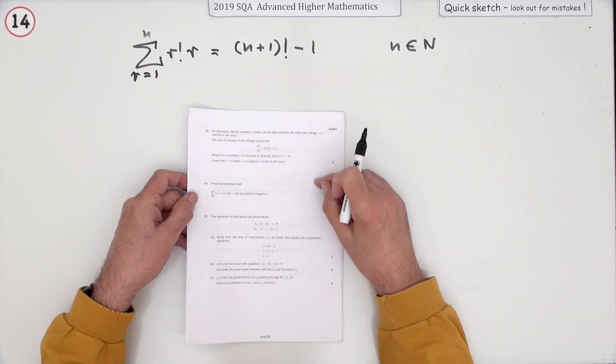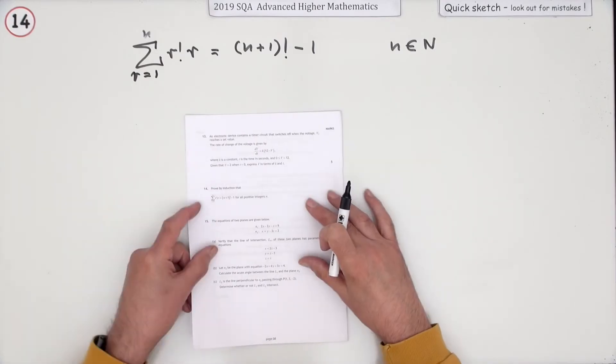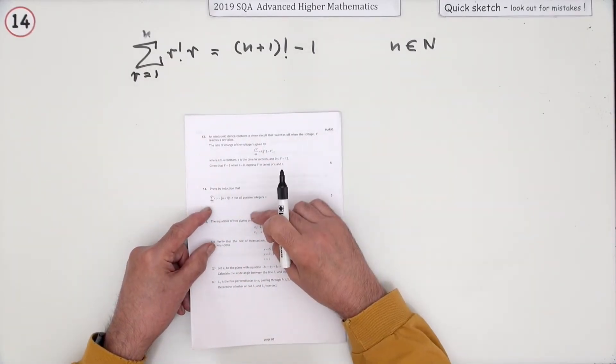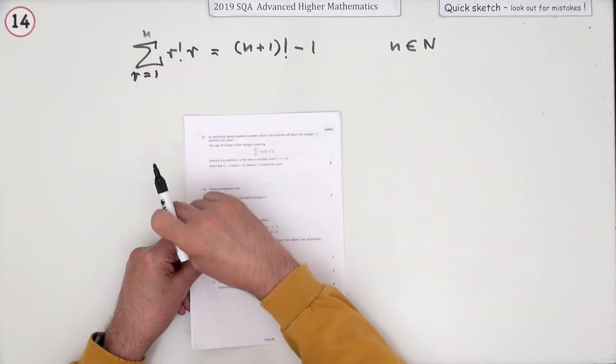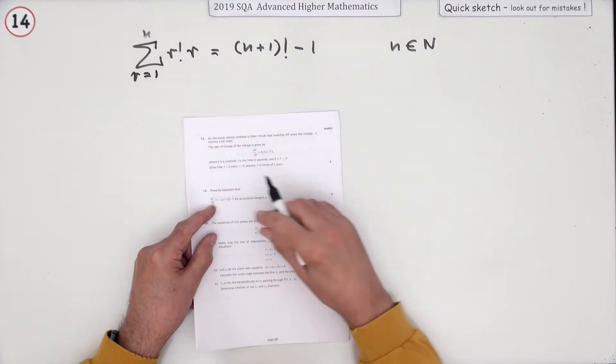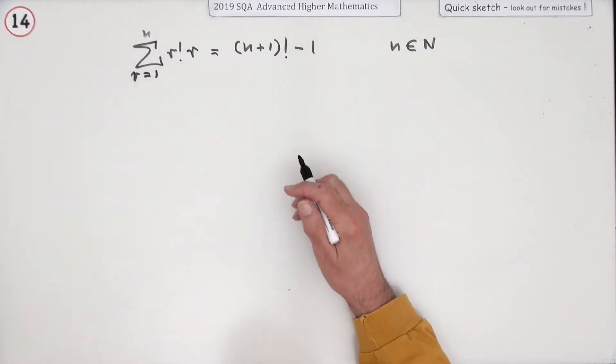Number 14 from the 2019 Advanced Higher Maths, five marks for proof by induction. Prove by induction that this statement is in fact correct. It's a summation one, but it's a factorial in it. It's the first time seeing a factorial, but it doesn't make it any harder though.